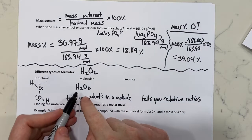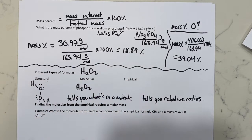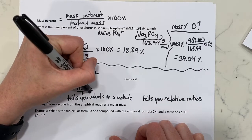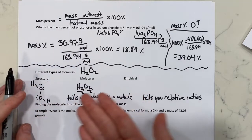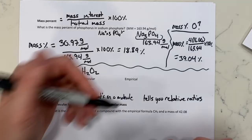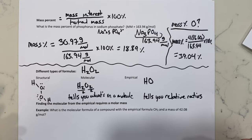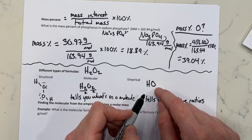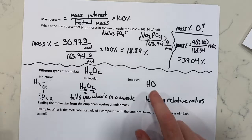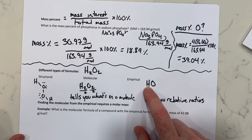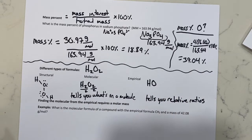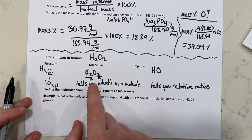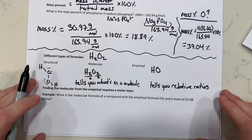For H₂O₂, there are two hydrogens and two oxygens. If I only had one hydrogen, how many oxygens would I have? One. You take the subscripts and divide by the lowest common denominator, giving HO — for every one hydrogen there's one oxygen. This would be the empirical formula. To get the molecular formula from the empirical formula, you need the molar mass.